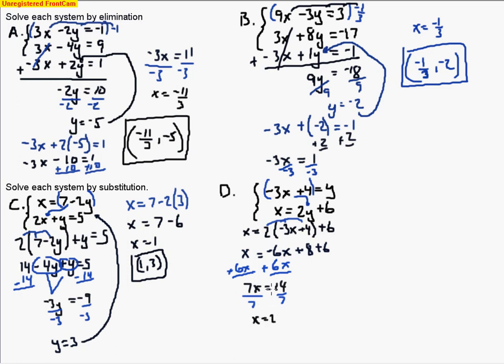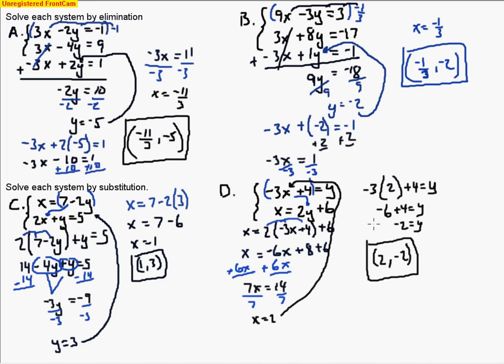So take that 2 and put it in place of the x in that equation above. So what I've got is negative 3 multiplied by 2, and then plus 4 equals y. So negative 6 plus 4 equals y, which is negative 2. So there's your y value. Your x value is 2. So we can write the ordered pair as 2, negative 2. So that's a little review on solving with elimination and substitution.